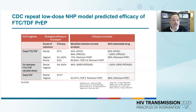The same happened with on-demand FTC-TDF, where we modeled rectal efficacy in the macaque model with a 2-1-1 dose schedule and found 100% efficacy. And the IPERGAY trial later showed that the efficacy of this regimen was approximately 100%.